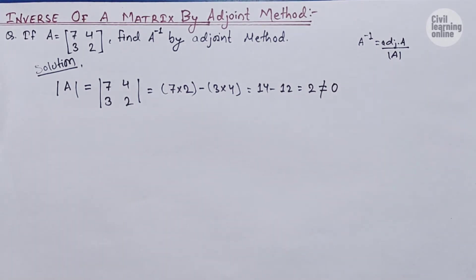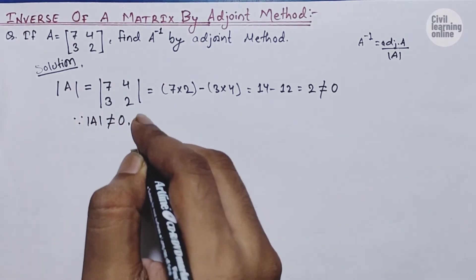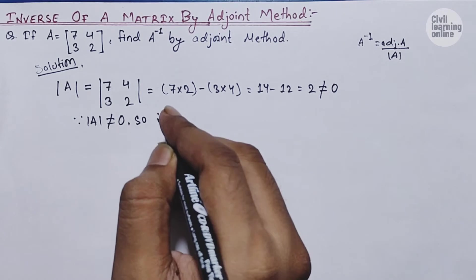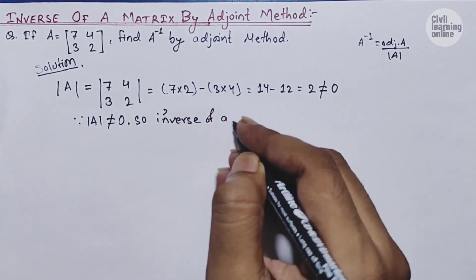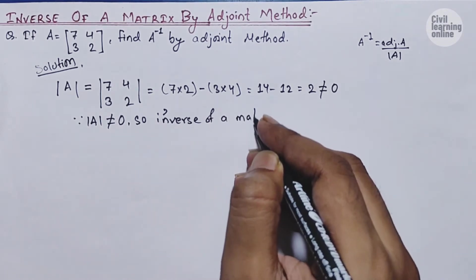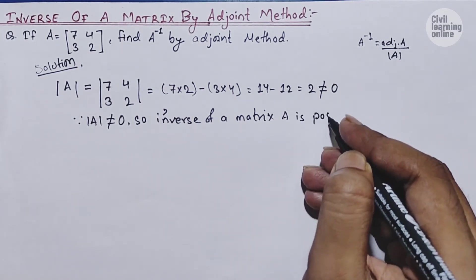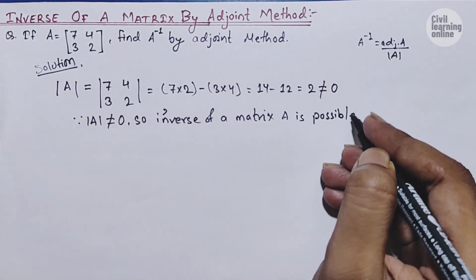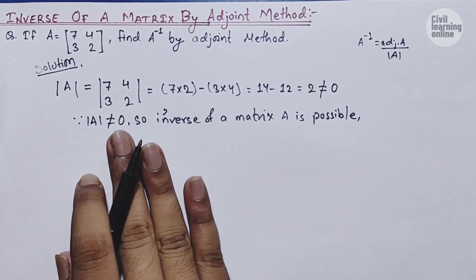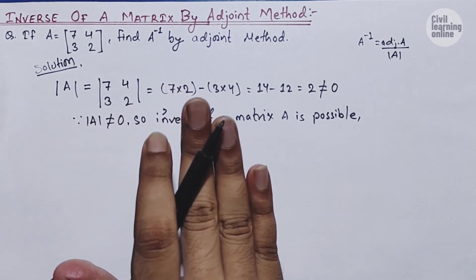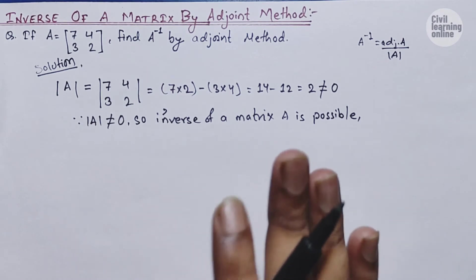We get 14 minus 12 which equals 2, which is not equal to zero. Since the determinant of A is not equal to zero, the inverse of matrix A exists. This means our matrix A is a non-singular matrix, and because it is non-singular, its inverse is possible.